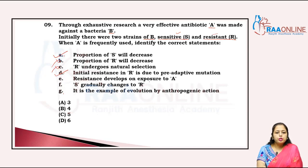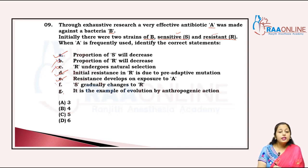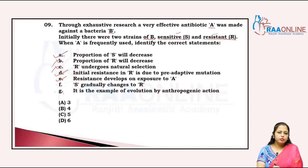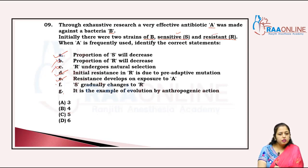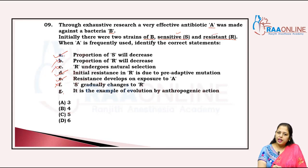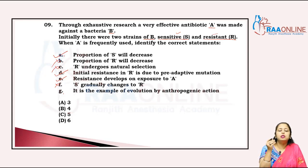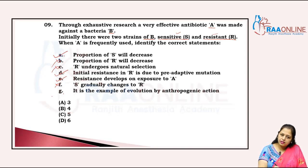Resistance developing on exposure to A — we can say it gradually changes, but it's not exactly correct, because sensitive cells will not survive to get resistant. However, when bacteria gradually acquire resistance after long use of that antibiotic, this is the example of evolution by anthropogenic action, as stated in NCERT. The answer is that statement D is correct.